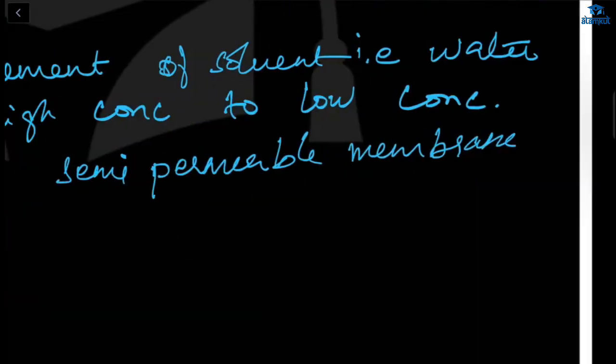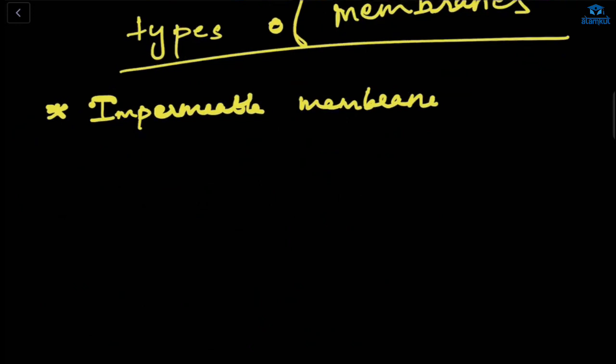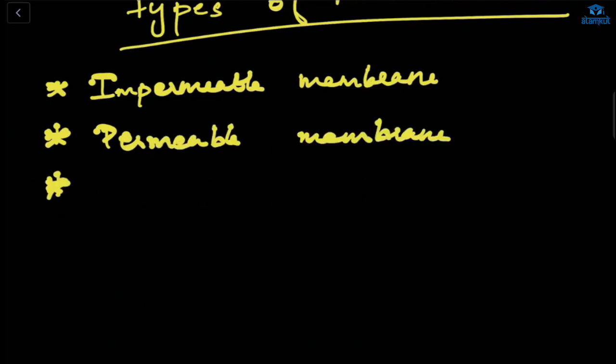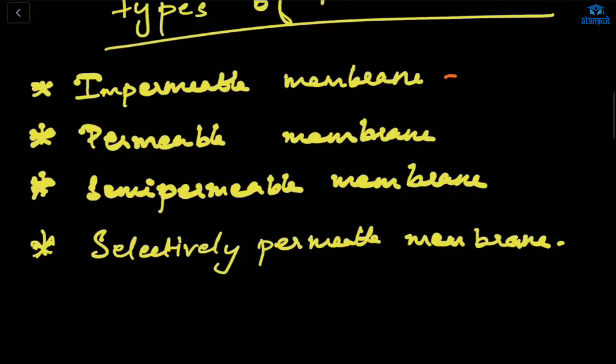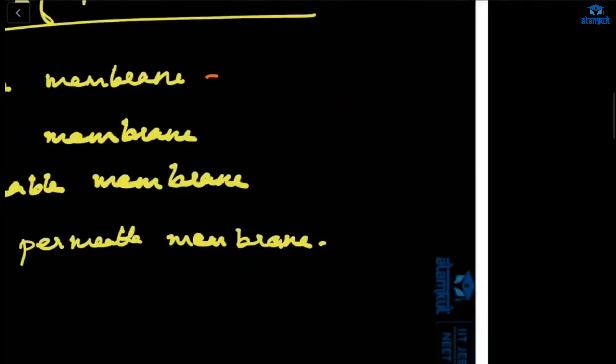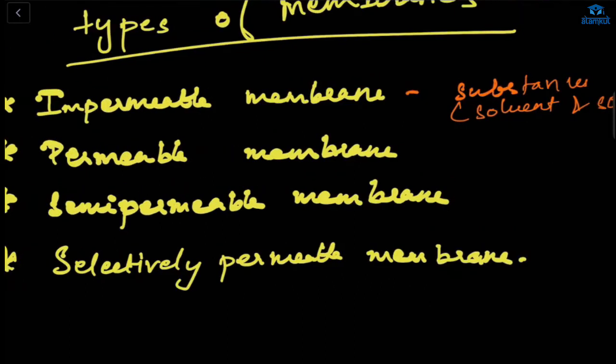Now let's see different types of membranes. First one is impermeable membrane. Let me write the four kinds first, then we'll see them one by one: impermeable membrane, permeable membrane, semi-permeable membrane, and selectively permeable. In impermeable membrane, this will not allow any movement of substance like solvent and solute. It will not pass through this membrane.